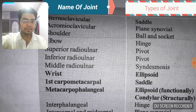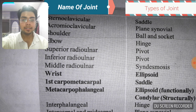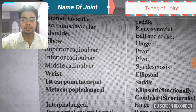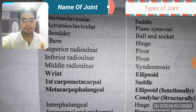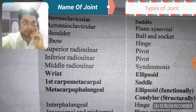The interosseous membrane between the radius and ulna is syndesmosis. Similarly, the tibiofibular joint is also a syndesmosis. Both the inferior tibiofibular joint and the interosseous tibiofibular joint are syndesmosis. The joints between the laminae of vertebrae are also syndesmosis. The tympanostapedial joint is also a type of syndesmosis.